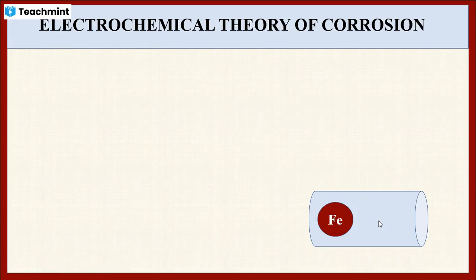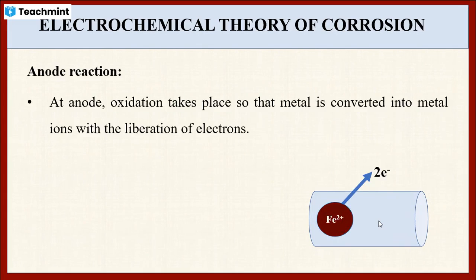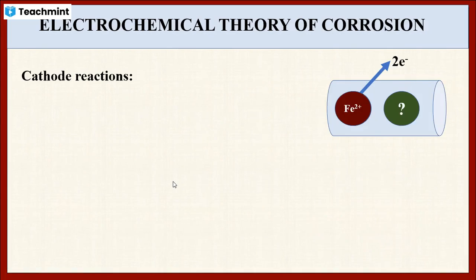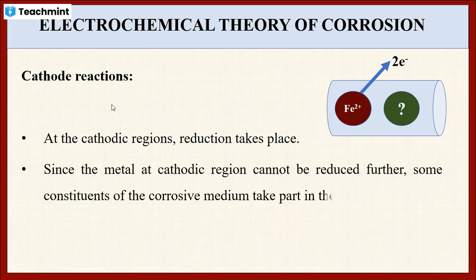For this, let us take the example of iron metal. As I said, at the anodic region, oxidation takes place. Hence, the iron metal is converted into Fe²⁺ ions with the liberation of electrons. The reaction is: iron is converted into Fe²⁺ ions with the liberation of two electrons. At the cathodic region, reduction takes place. The species present in the corrosive medium such as H⁺, water and oxygen undergo reduction using the electrons liberated at the anodic region.